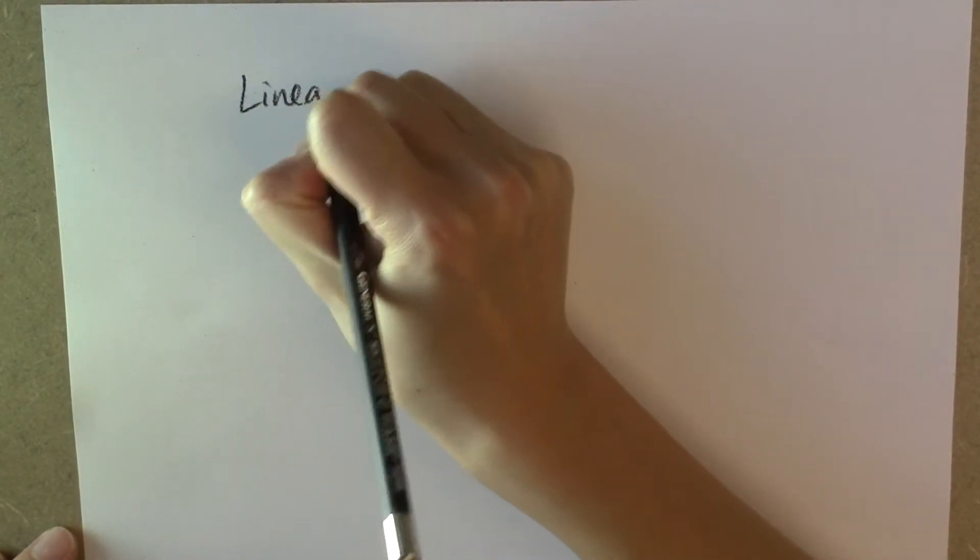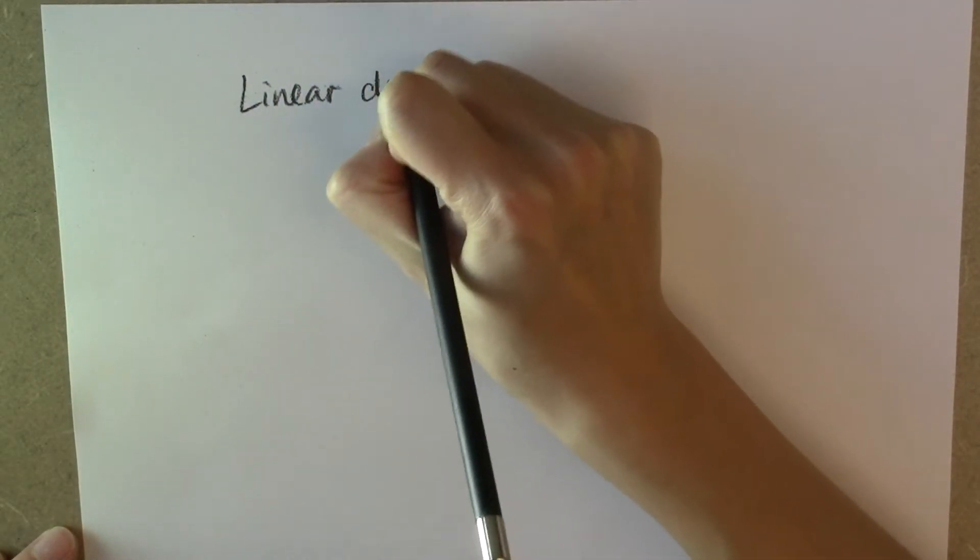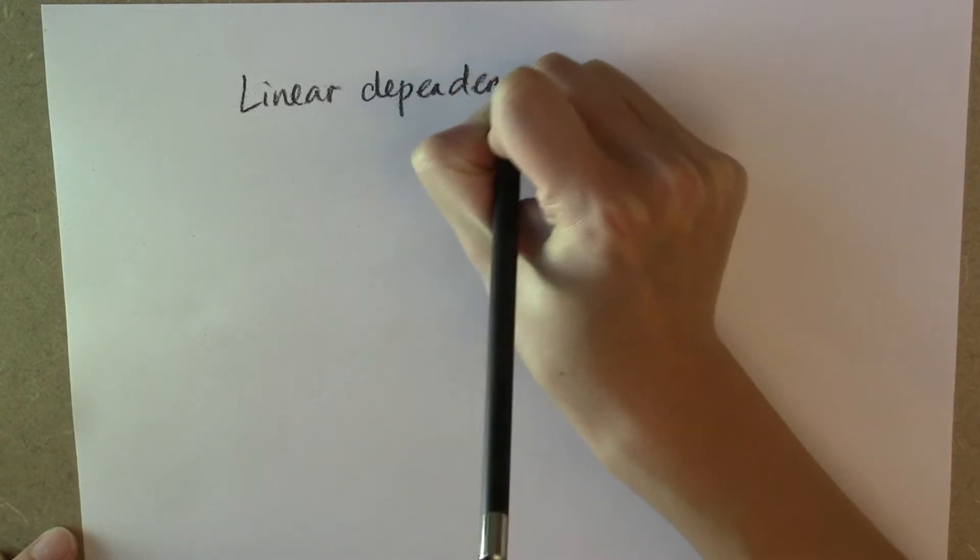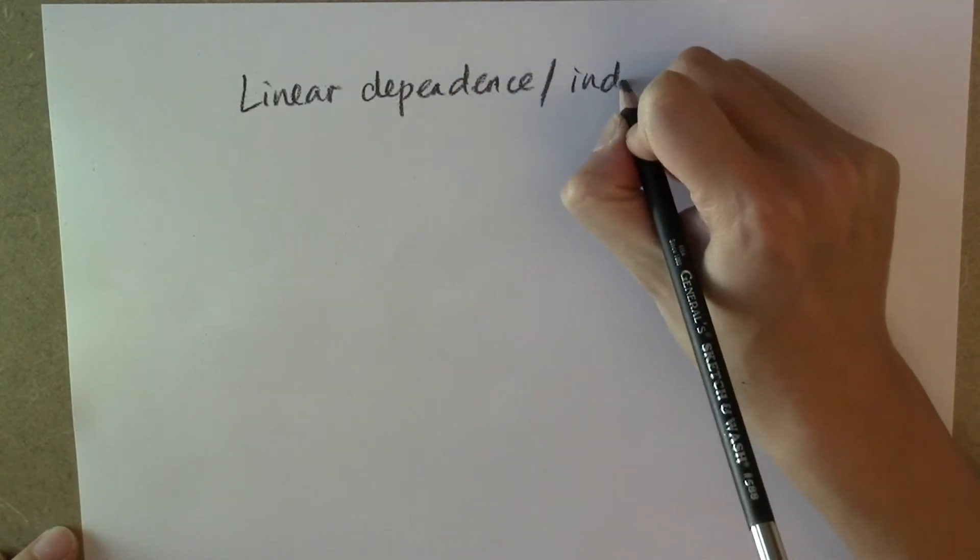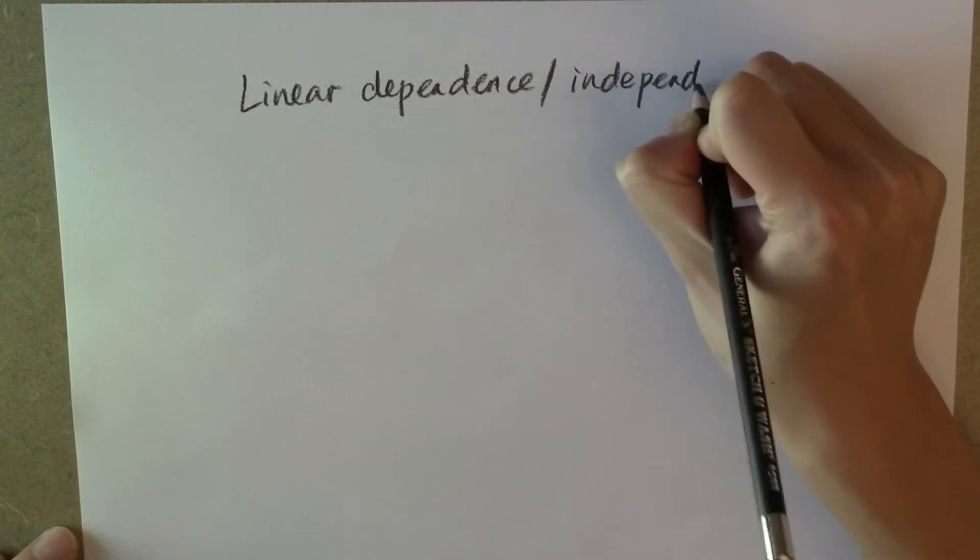In this video, we want to review the idea of linear dependence and linear independence of abstract vectors, such as polynomials and functions.